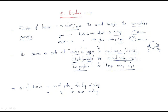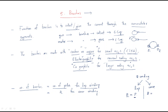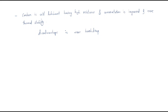The number of brushes is also important. There are two types of winding connections: lap winding and wave winding. For lap winding, the number of brushes equals the number of poles — B equals P. For wave winding, the number of brushes equals two.